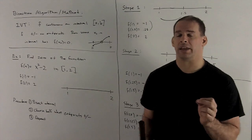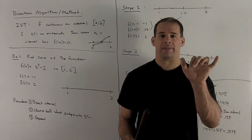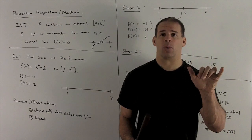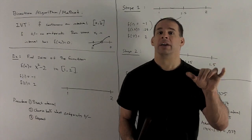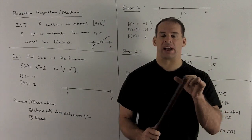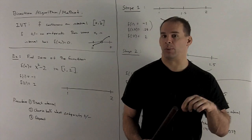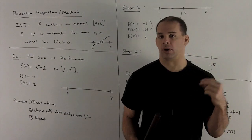So what we want is to always have an interval where the values are going to be positive on one endpoint, negative on the other. Intermediate Value Theorem says the 0 has to live in between them. And then we just keep repeating over and over and over again.